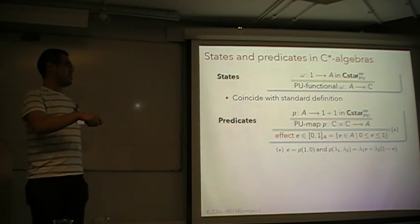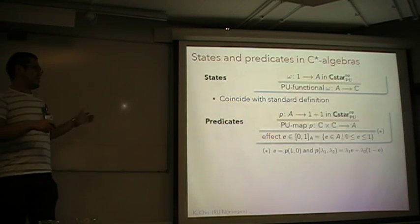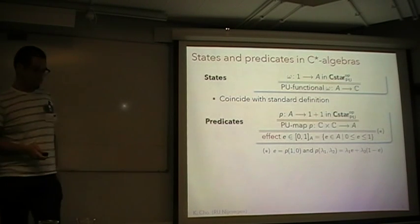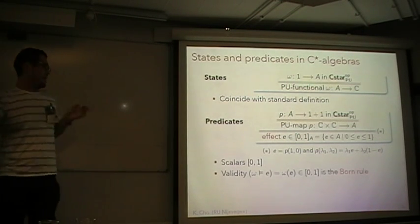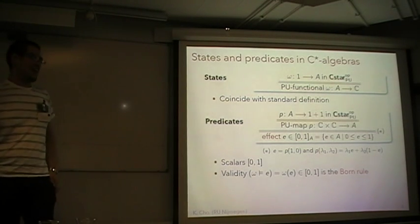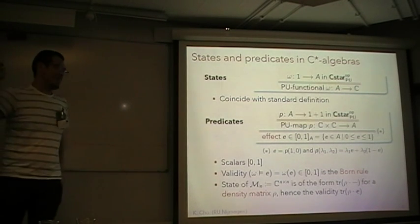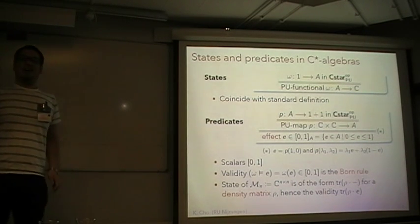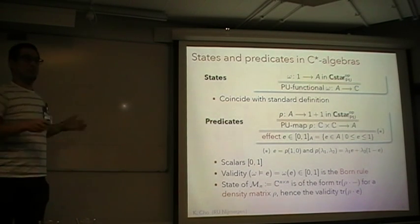So what is a predicate? It is this map — a PU map from ℂ times ℂ to A — and in fact this corresponds to an effect. An effect is an element in the unit interval of a C*-algebra. It turns out scalars are the unit interval of real numbers, and validity is given by applying a state to an effect — this is the Born rule. For example, a state of the matrix algebra is always given by a density matrix, and therefore validity is given by the trace of the density matrix multiplied by the effect.